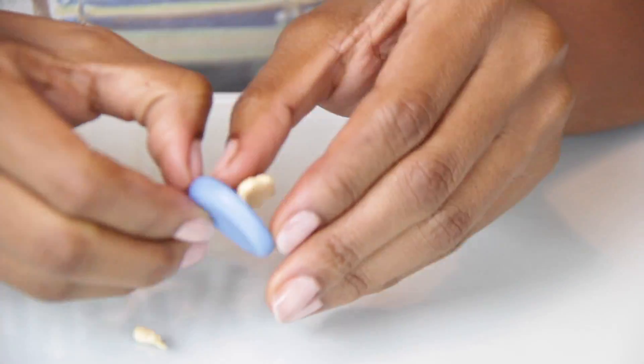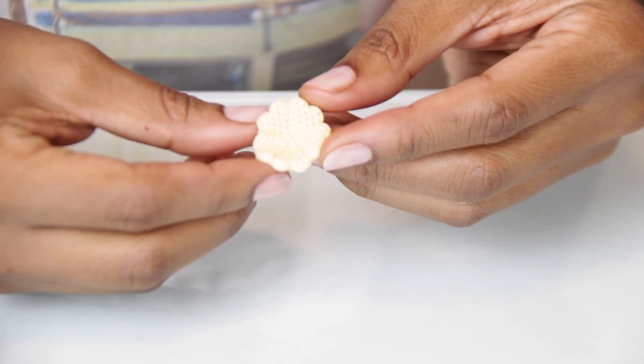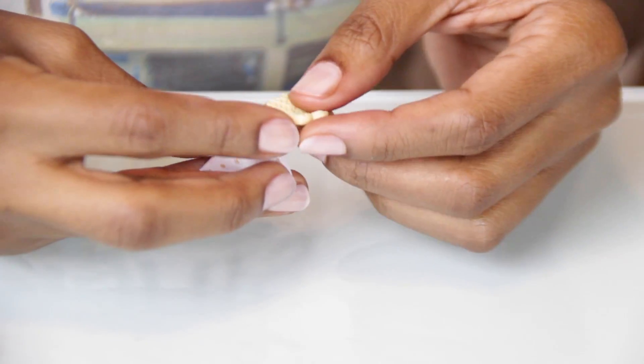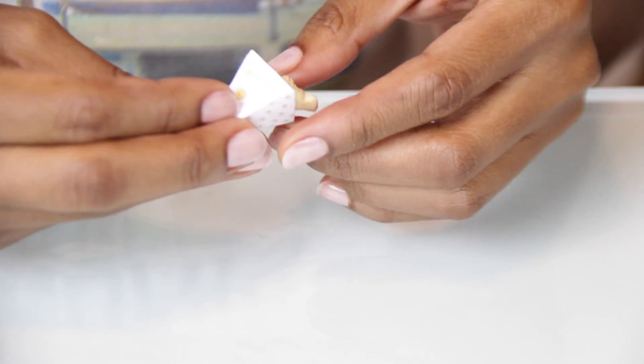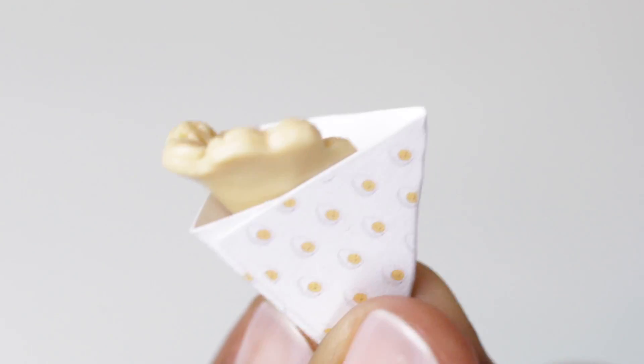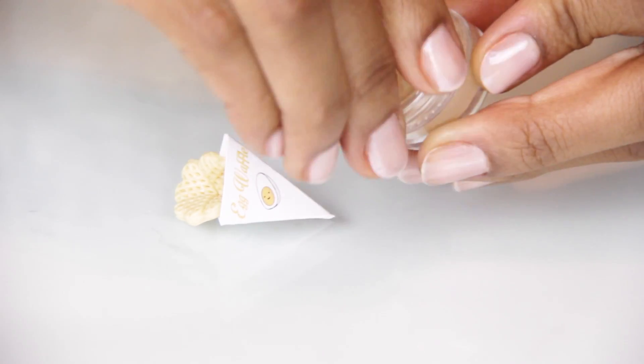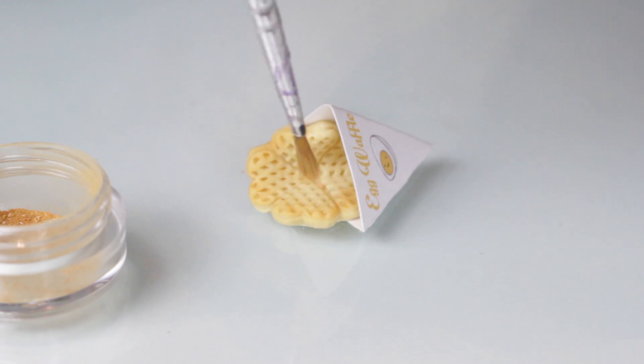And this mold creates five little heart waffles that are all kind of connected together. To give the waffle color and to make it look like it's been cooked, I'm just going to add some yellow ochre chalk pastels.